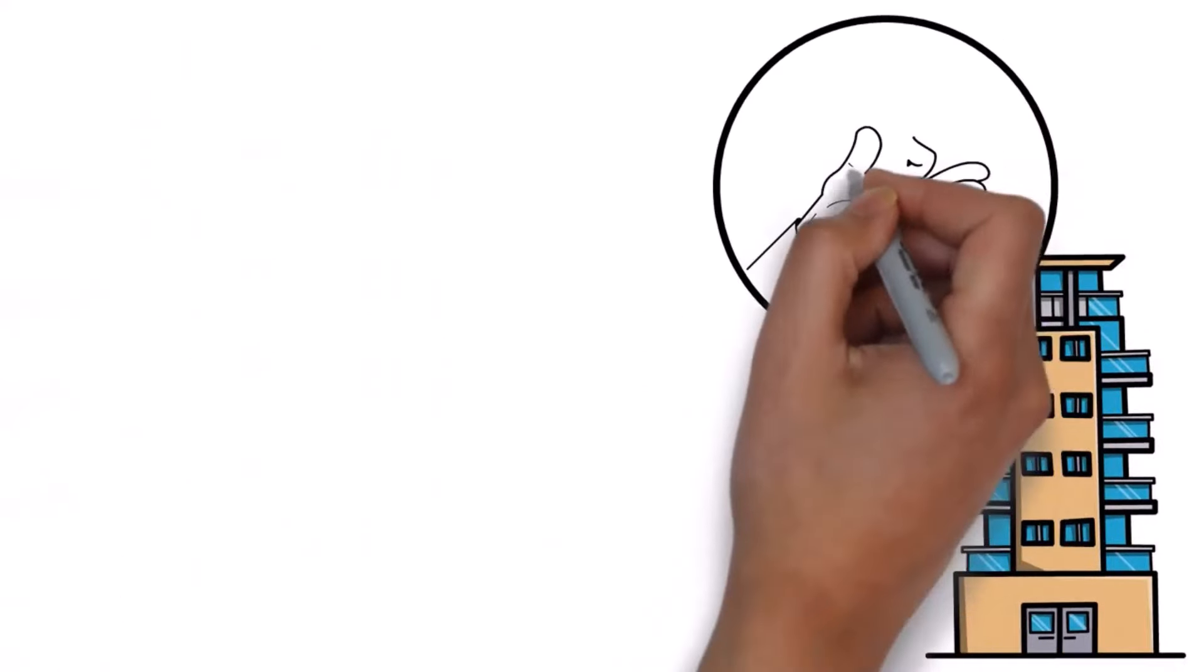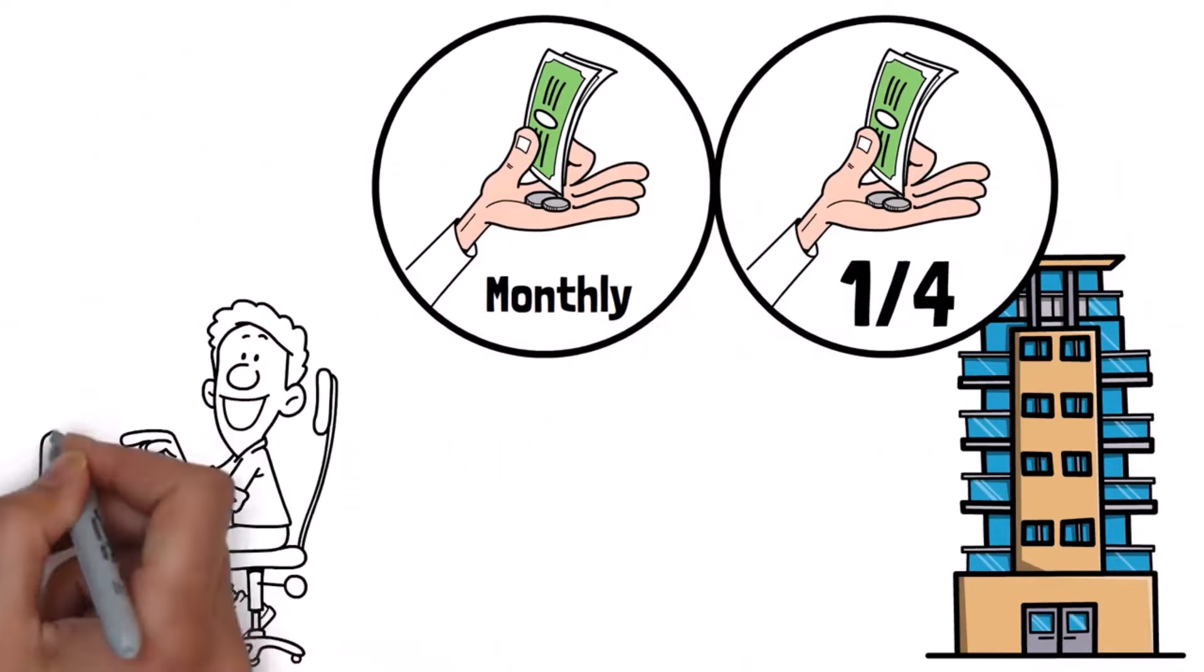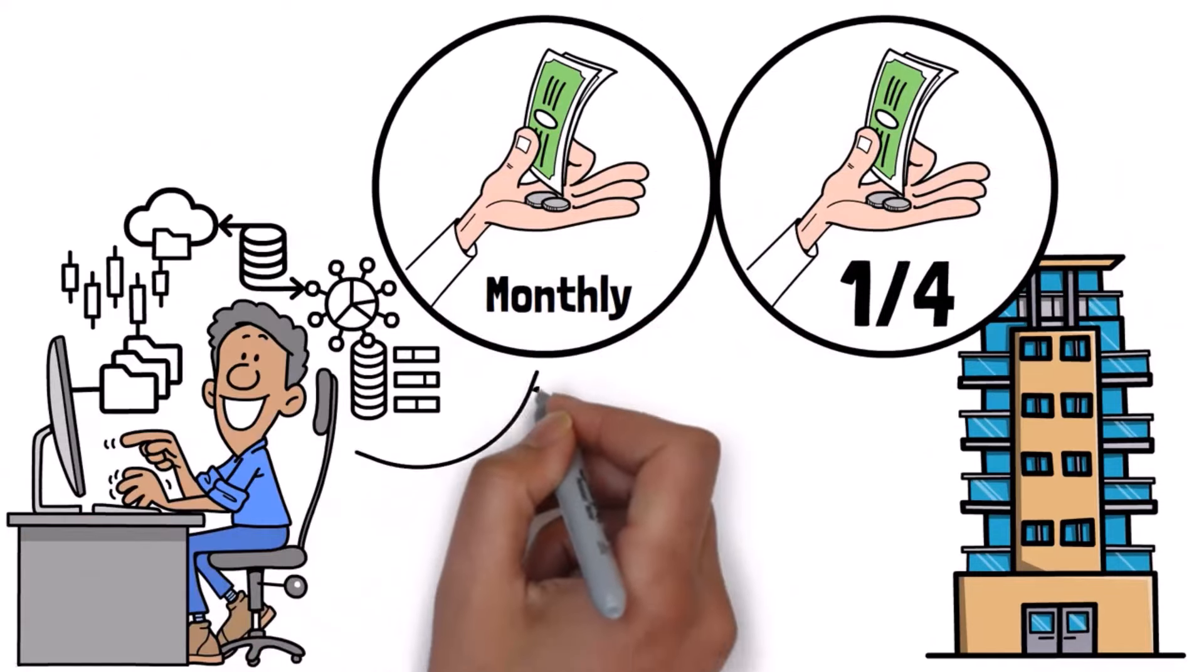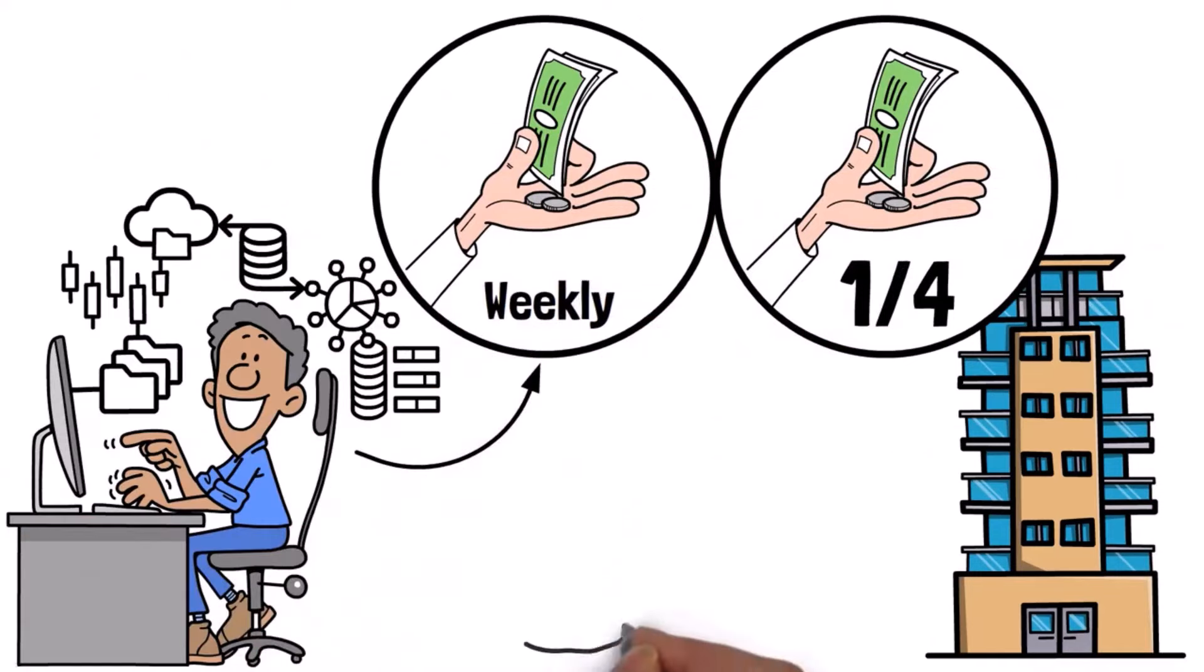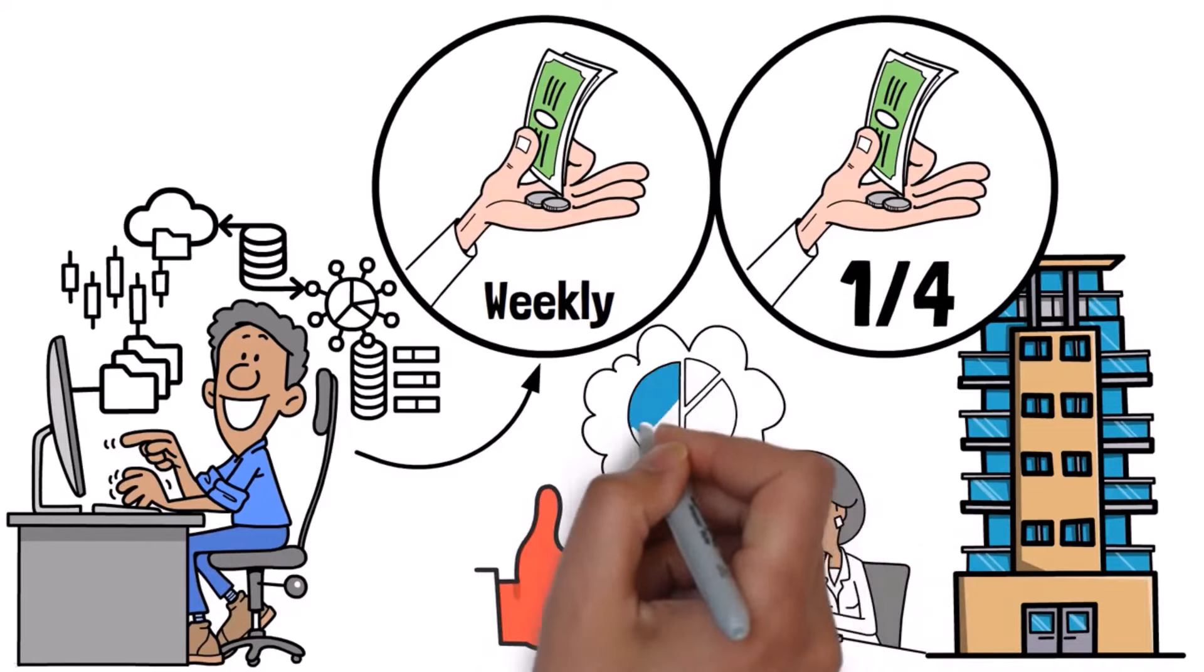Most companies pay dividends quarterly, but some pay monthly. By carefully selecting a mix of these stocks, you can receive payments almost every week. To make this strategy possible, we need to create a portfolio with four monthly dividend-paying stocks.